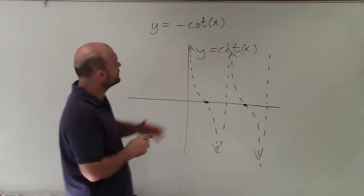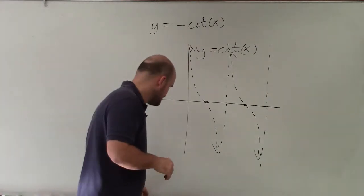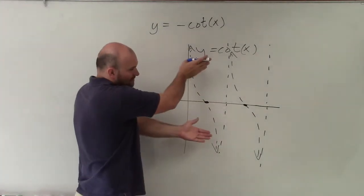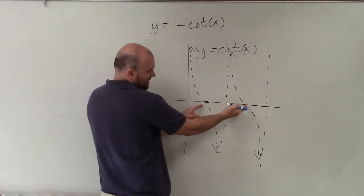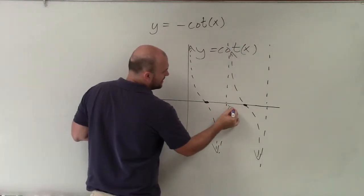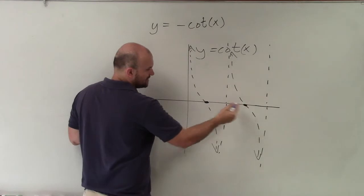But so now you can see if we're going to graph y equals negative cotangent, all I'm simply doing is taking this graph and flipping it over. So the x-intercepts are going to remain the same, and the asymptotes are going to remain the same. Remember, it takes a period for it to repeat itself.